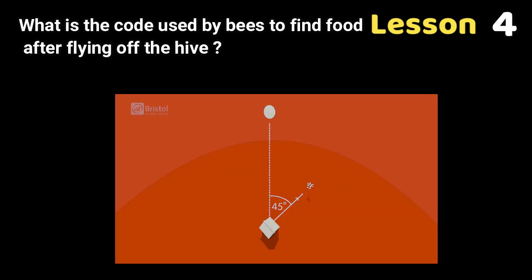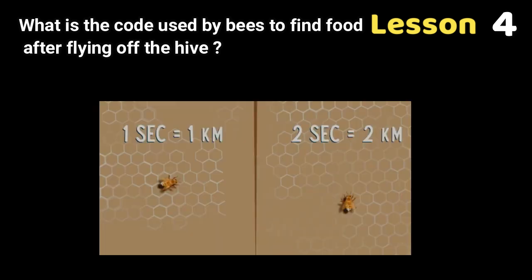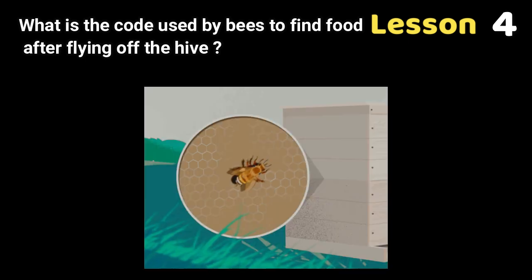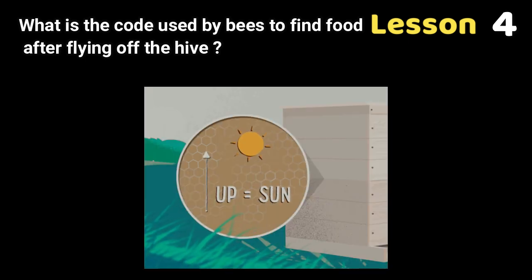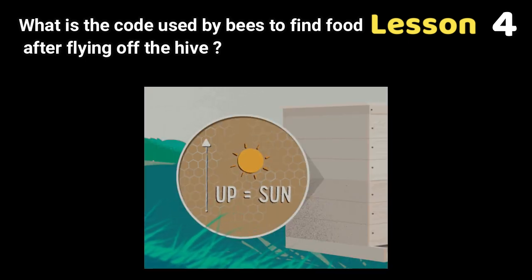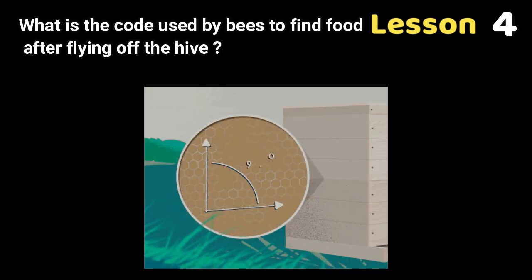The angle of the dance with the sun tells the other bees the correct direction. The length of the dance tells the other bees the correct distance. The bees in the hive read the code of the dancing and then fly off to the specific location.